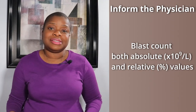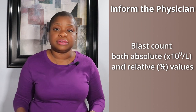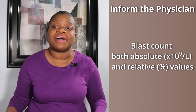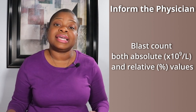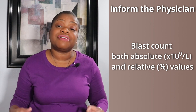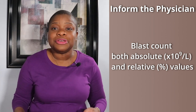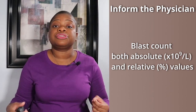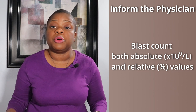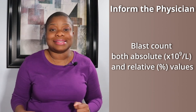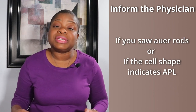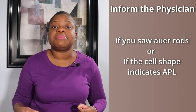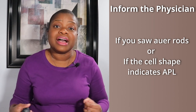Now you need to call this information to the patient's physician. You're going to tell them the blast count — both absolute and relative values — because the percentage can determine if the patient is considered to have an acute leukemia. Generally, 20% is the threshold for adults, but even a low count can direct the physician to order a bone marrow biopsy, which can be packed with blast cells. You will also tell the physician if you saw Auer rods, or if the shape of the cells is indicative of APL.